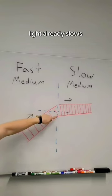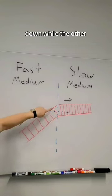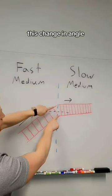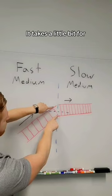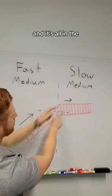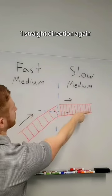So this part of the light already slows down while the other half of it is moving faster. That's what causes this change in angle. It takes a little bit for this part to catch up. This is already moving slower, and then by the time it gets here and it's all in the slow medium, it's moving one straight direction again.